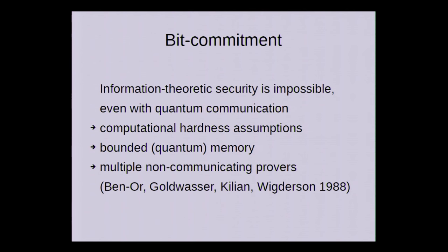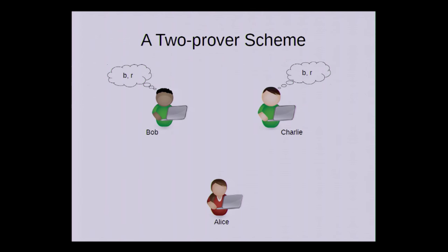Let's see how such a multi-prover scheme might look. On the top, we have the two provers, and they both know the value of the bit B that they want to commit to, and they have some shared randomness R. But during the protocol, they can't communicate with each other.